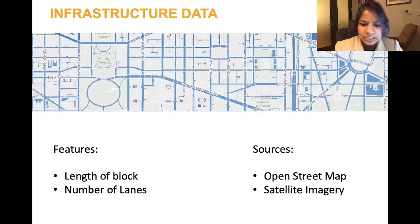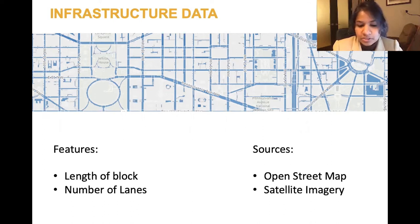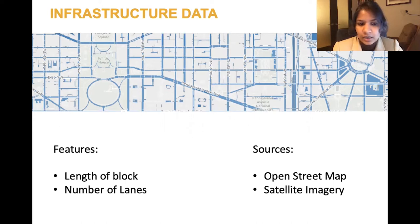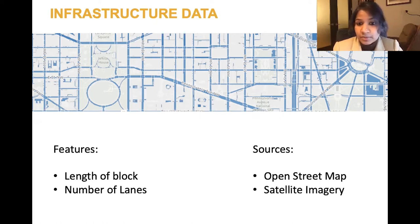Infrastructure data is important because the infrastructure often determines how vehicles move, how pedestrians and bicyclists use the road, and it either provides for or enables higher or lower speeds or provides safe movement for vulnerable users like pedestrians and children. Some features that we often use in our work are the length of the blocks and the number of lanes, as these are two factors that determine how likely vehicles are to be going at high speeds.